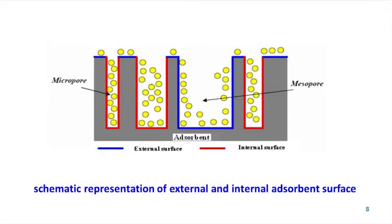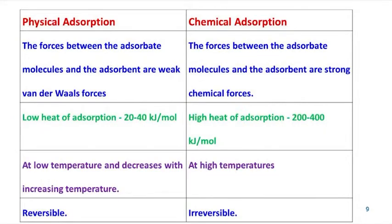Adsorption often occurs as a monolayer on the surface of fine pores; however, several layers sometimes occur. Physical adsorption, or van der Waals adsorption, usually occurs between the adsorbed molecules and the solid internal pore surface and is readily reversible. When the molecules of the adsorbate are held to the surface of the adsorbent by chemical forces, the adsorption is called chemical adsorption or chemisorption.